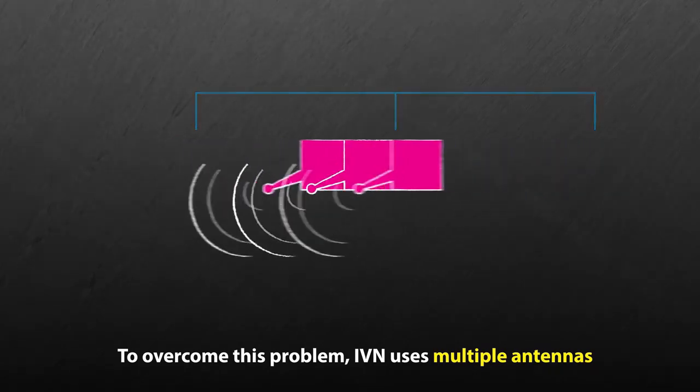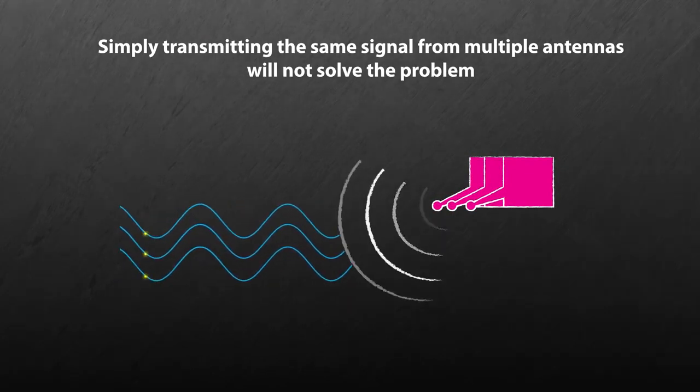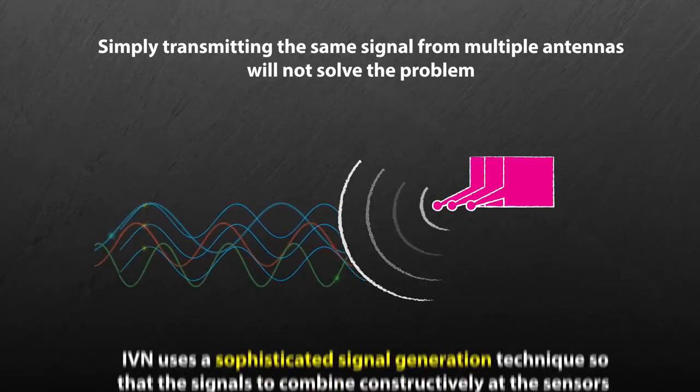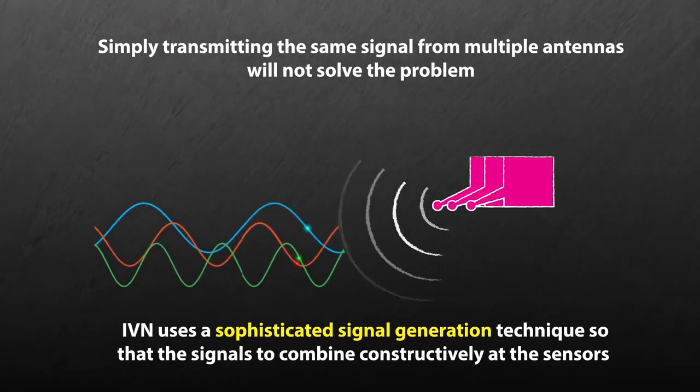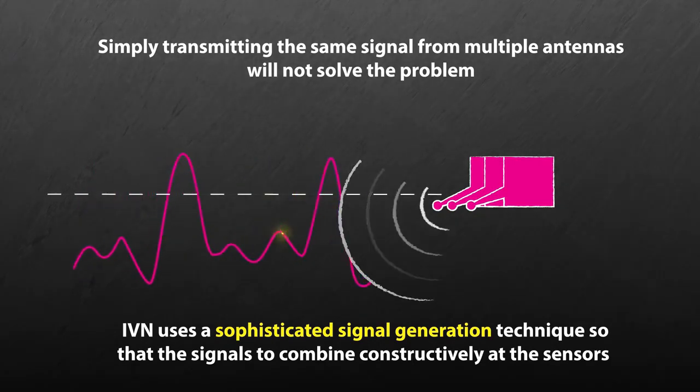But simply transmitting the same signal from multiple antennas will not solve the problem. IVN uses a sophisticated signal generation technique that allows the signals to combine constructively at the sensors.